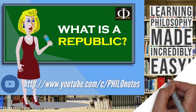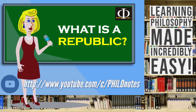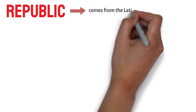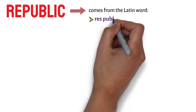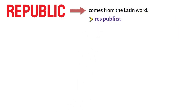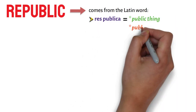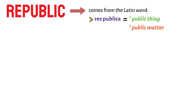What is a republic? Etymologically speaking, the word republic comes from the Latin word res publica, which literally means public thing, or public matter, or public affair.